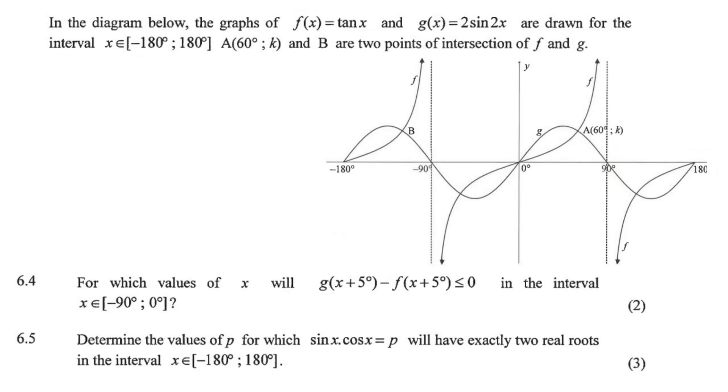Carrying on, these questions say, for which value of X will this ugly expression be smaller than 0 in the interval minus 90 to 0. So we only have to look between this area over here. So they want to know, this isn't nice to work with. So what you'd rather do is you just do this. You take the F graph to the other side. And then you have that. So they're saying, where is the graph of G smaller than the graph of F?